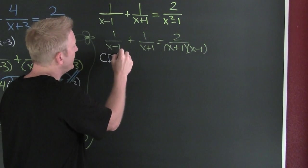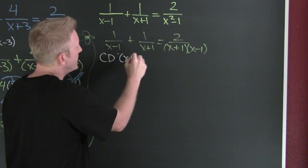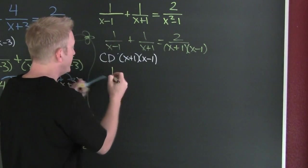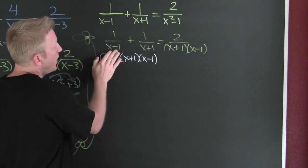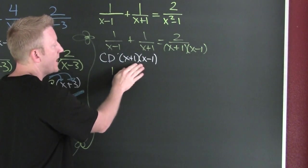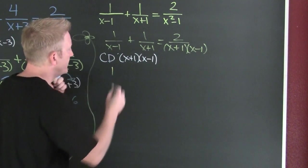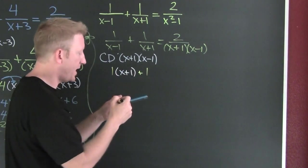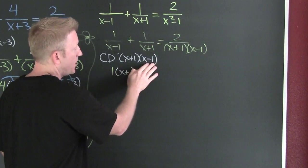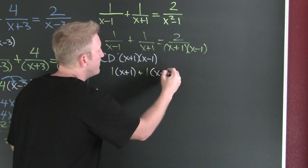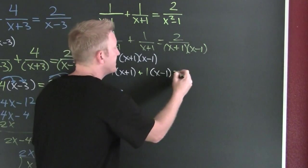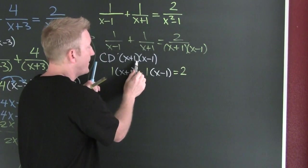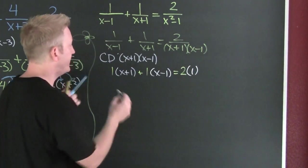I see my common denominator here — it's going to be (X plus one)(X minus one). So I take this numerator, one, and multiply it by what its denominator is missing that the common denominator has — it's missing a factor of X plus one. Then I add one times what its denominator is missing — X minus one. And that's going to equal that numerator, two, multiplied by what its denominator is missing — nothing, so just one.